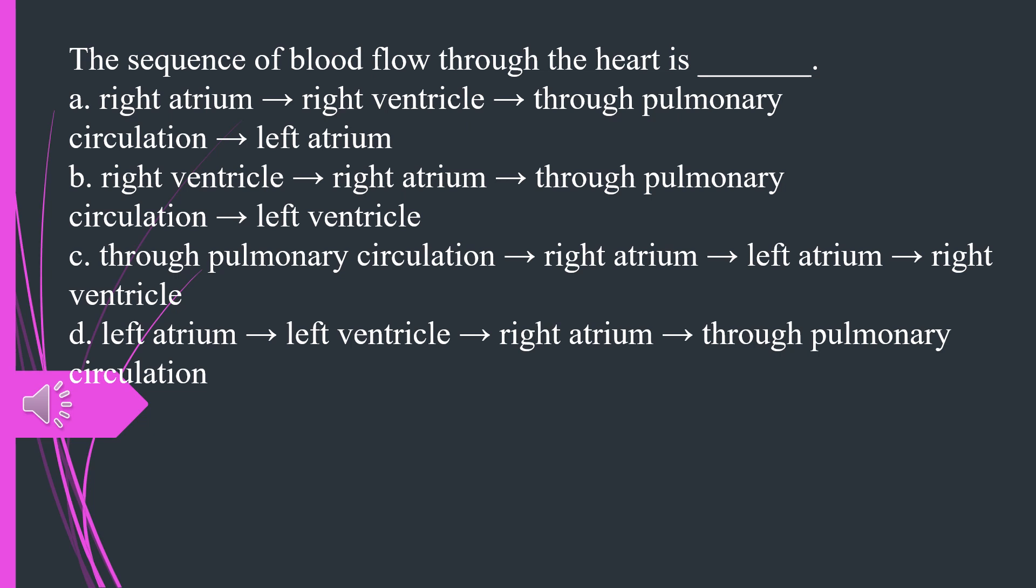The sequence of blood flow through the heart is A. Right atrium to right ventricle to through pulmonary circulation to left atrium B. Right ventricle to right atrium to through pulmonary circulation to left ventricle C. Through pulmonary circulation to right atrium to left atrium to right ventricle D. Left atrium to left ventricle to right atrium to through pulmonary circulation. The answer is A.